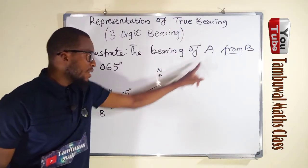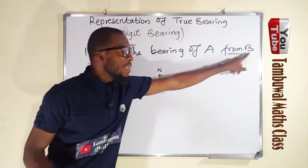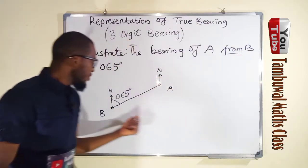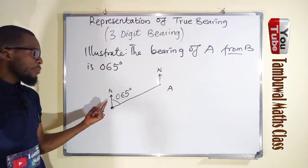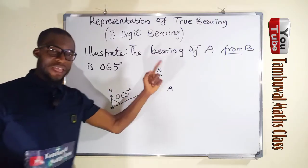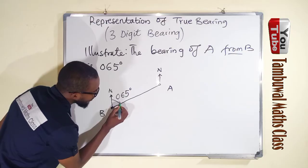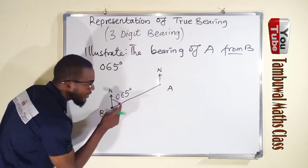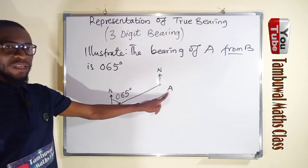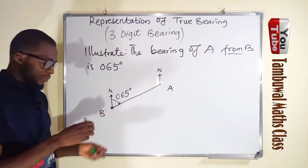So we have just illustrated this information here. The bearing of A, this is A, from B. It means the angle is measured from B to A. But this angle, you must add an arrow hitting the line leading to A, to show you this is where the angle stops.